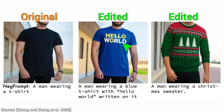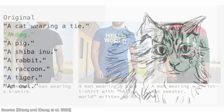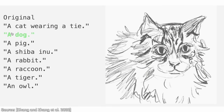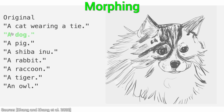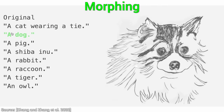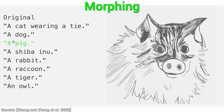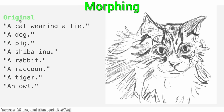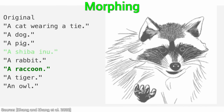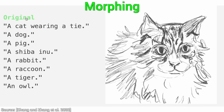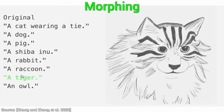We can also do this with drawings, and if we do, something amazing happens. We can start out from a crude drawing of a cat and ask it to morph into different animals. Through this, it can become a dog, or a pig, or a raccoon, or even other animals.